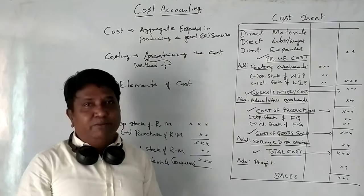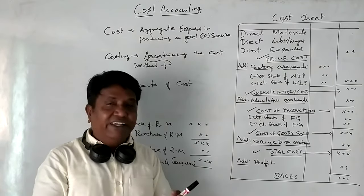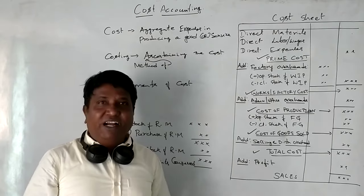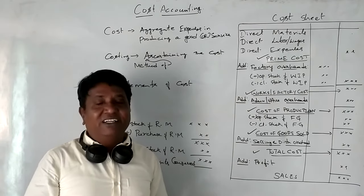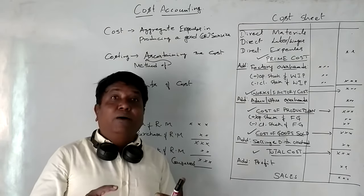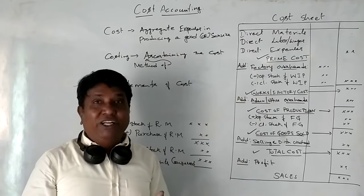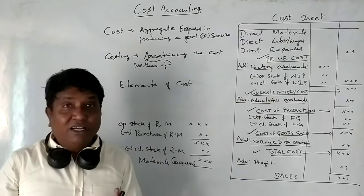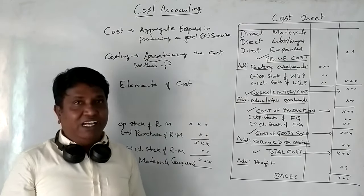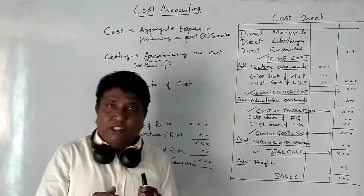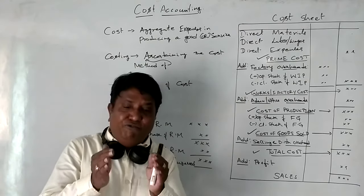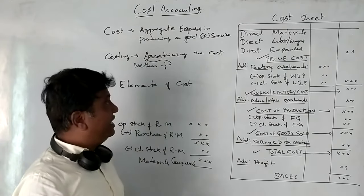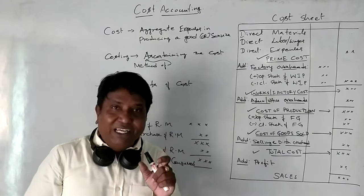Factory overhead includes factory rent, factory lighting, factory electricity, plant and machinery depreciation, factory plant and machinery repairs, and all other factory indirect expenses and indirect materials.